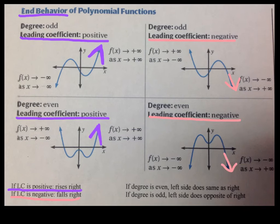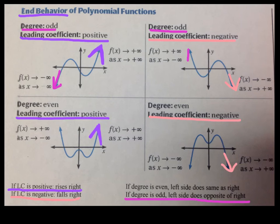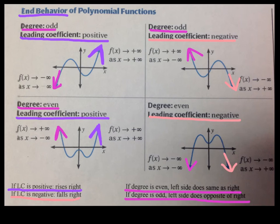The left end is controlled by the degree. If the degree is odd, the left side does the opposite of the right — I always think: odd, opposite. So if the right is going up, the left is going down, and vice versa. If the degree is even, the left is the same as the right. So you always know what the ends are going to do based on the degree and the leading coefficient.